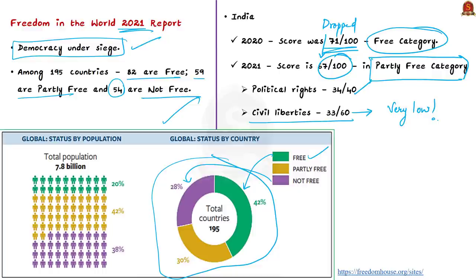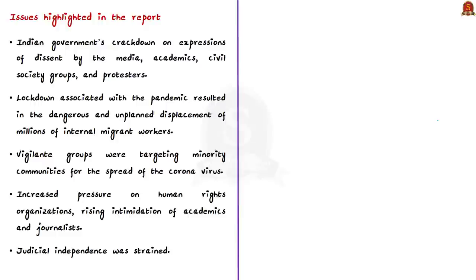Based on the 25 indicators, the report has noted many critical points about India. First, it noted that India's nationalist government and its allies presided over rising violence and discriminatory policies. The report critically notes that the government allegedly pursued a crackdown or suppression when there were expressions of dissent by the media, academics, civil society groups, and protesters.